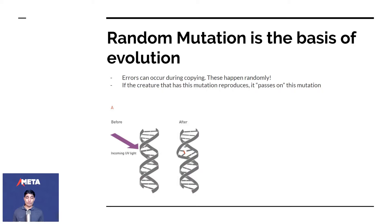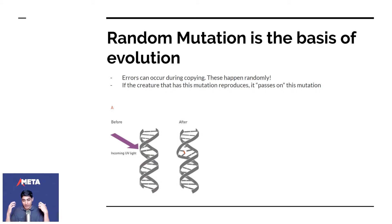The basis of evolution is random mutation. When DNA splits during the copying process, errors happen randomly. It could happen in the presence of radiation, or just randomly, or because of carcinogens. Smoking, for example, just speeds up the number of errors you pick up — that's all it does. For now, you just need to understand that errors can happen during copying.